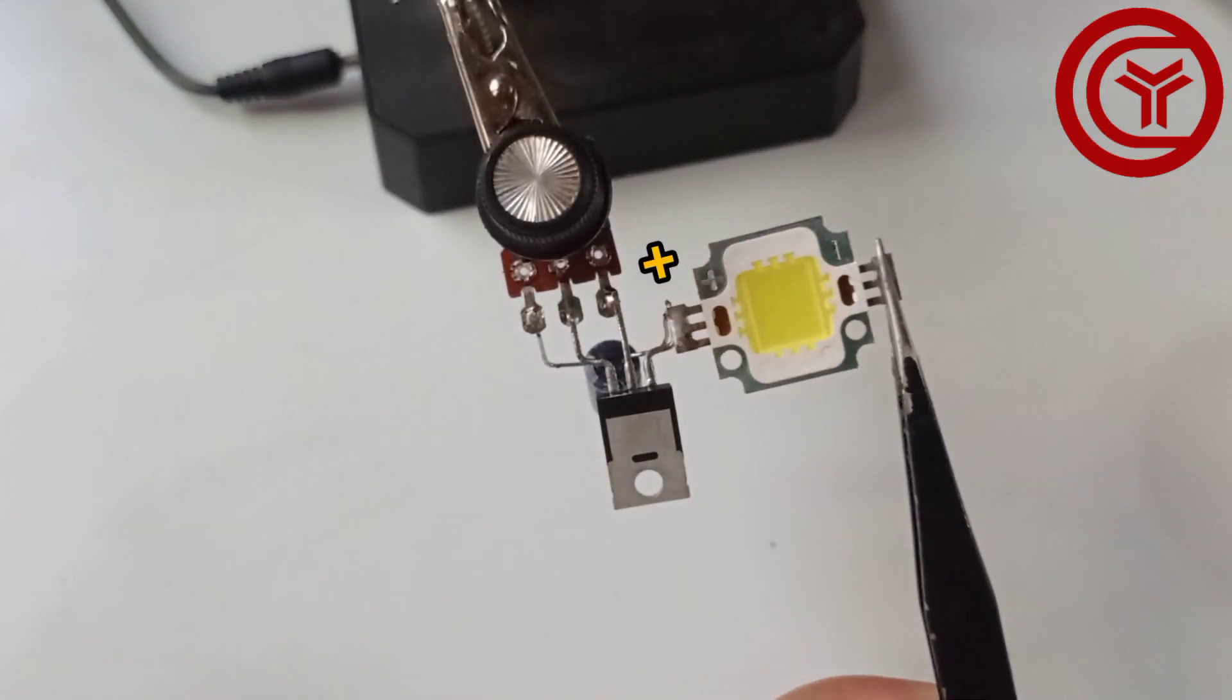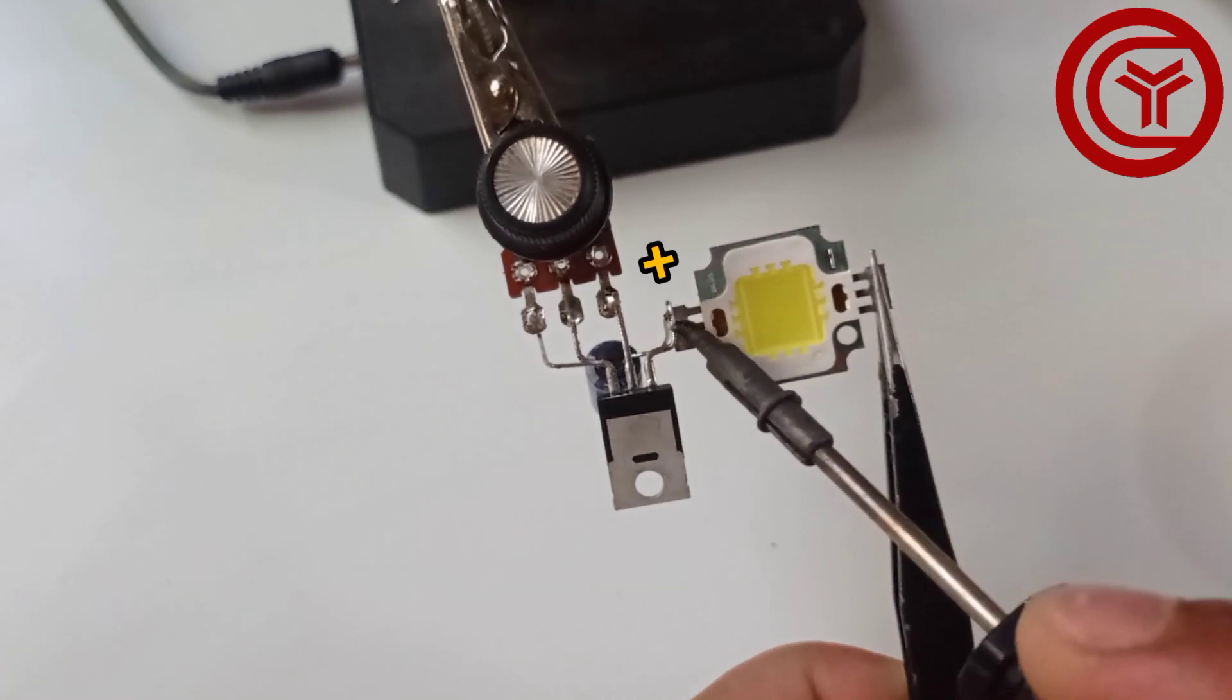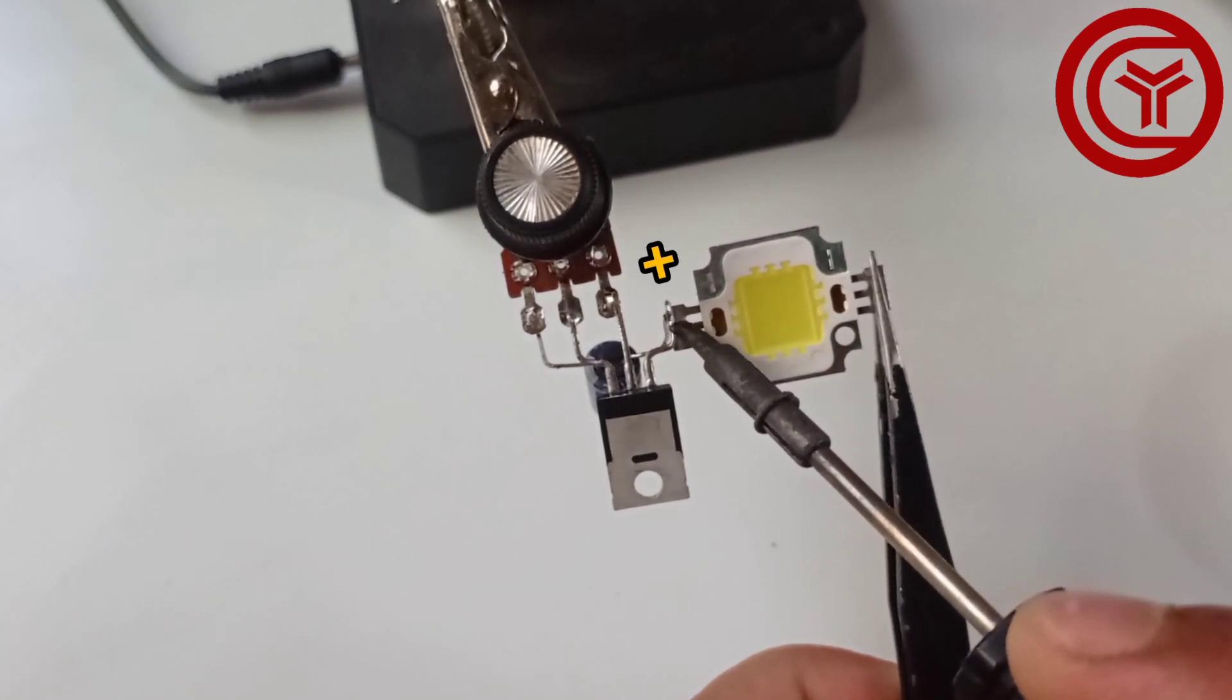Solder LED positive on source pin of MOSFET. You can also use LEDs up to 100W.